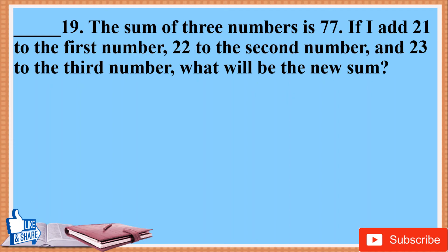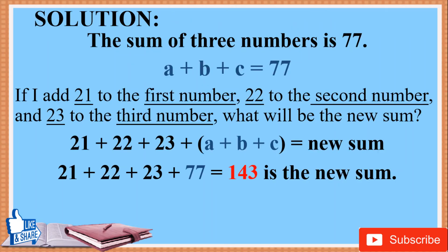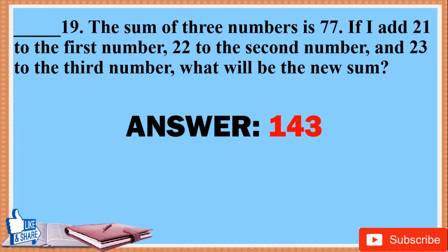19. The sum of three numbers is 77. If I add 21 to the first number, 22 to the second number, and 23 to the third number, what will be the new sum? Solution: A + B + C = 77. The new sum is 21 + 22 + 23 + A + B + C = 21 + 22 + 23 + 77 = 143. Answer: 143.